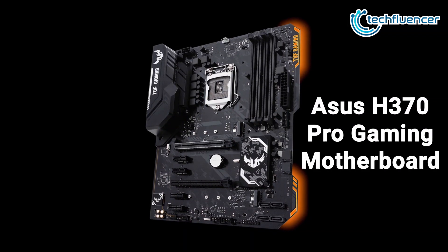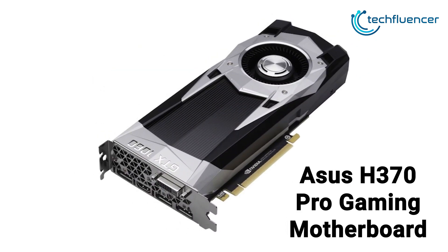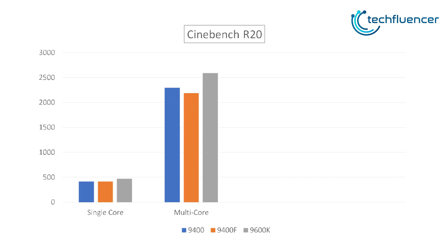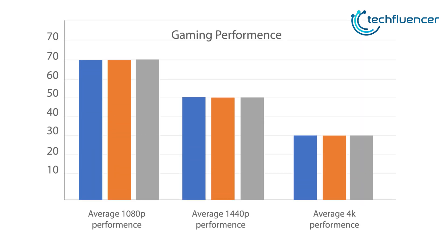For benchmarking, I used the Asus H370 Pro Gaming Motherboard, 16GB of RAM, and a GTX 1060 graphics card with all processors. On Cinebench R20, the 9600K scored 15% better than the 9400 and 9400F on both single-core and multi-core tests. The 9400 came second, beating the 9400F on both. When testing average FPS at 1080p, 1440p, and 4K gaming, the performance remained the same for all three — which speaks a lot about how great the 9400F is, as its significantly lower price still delivered the same gaming output as the 9400 and 9600K.